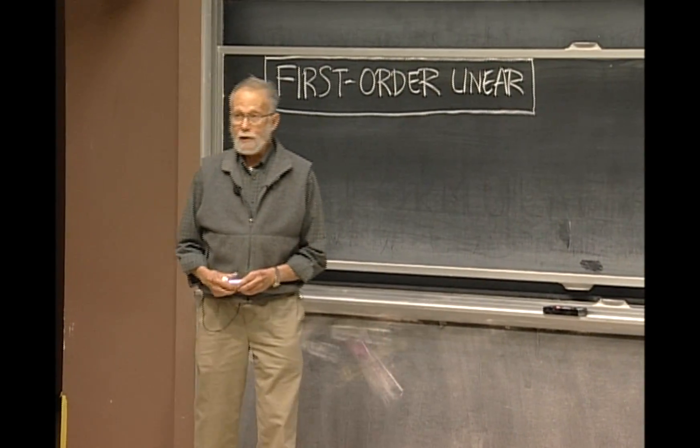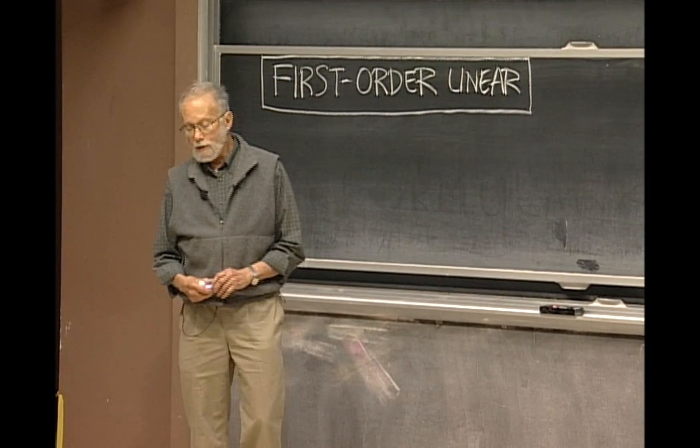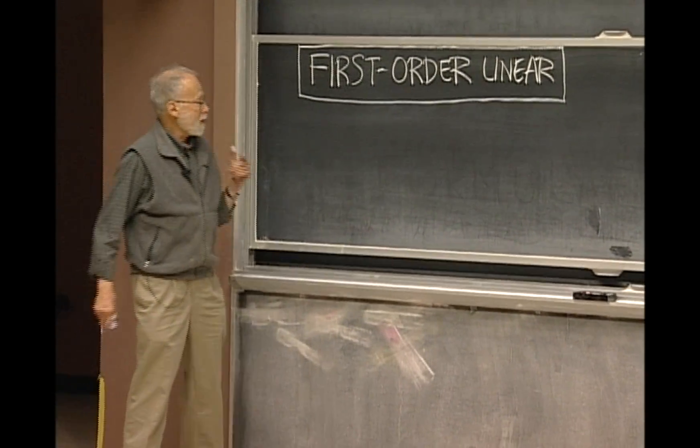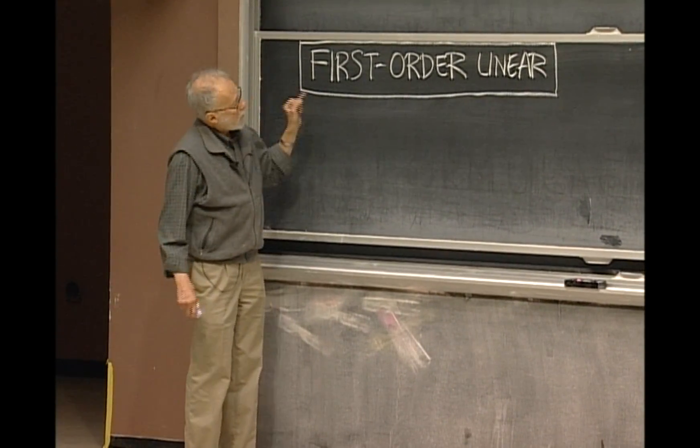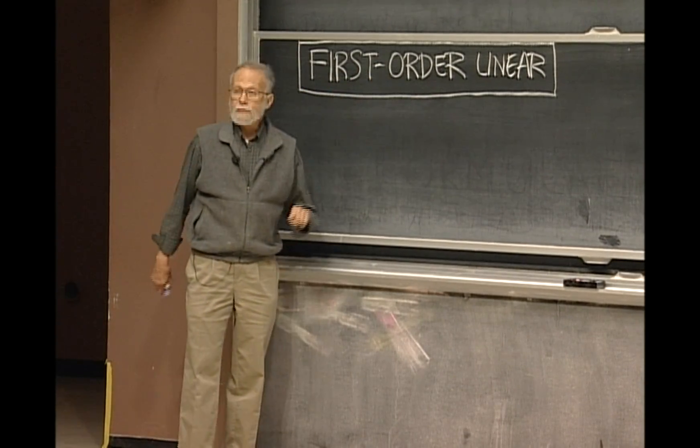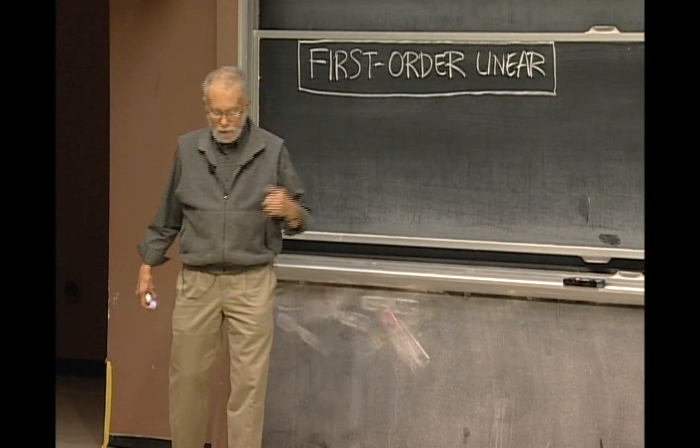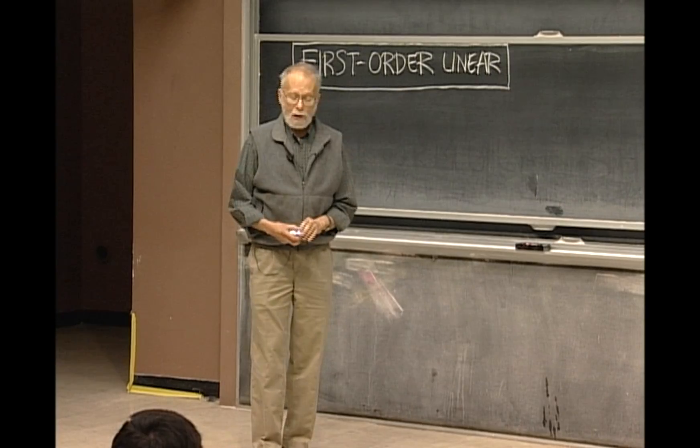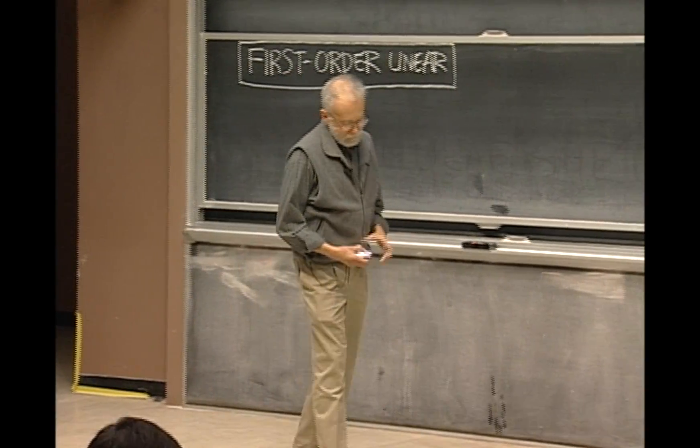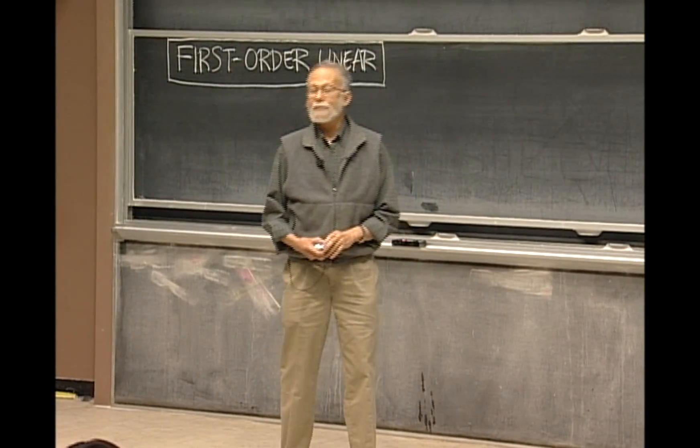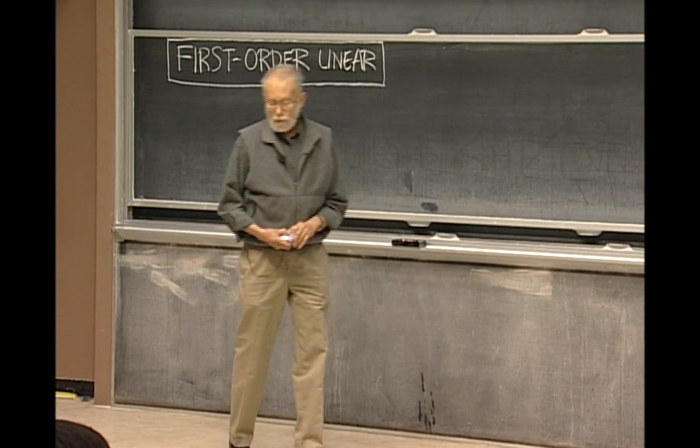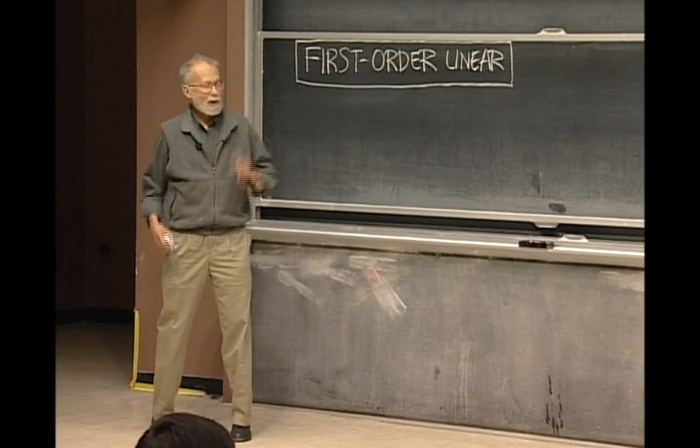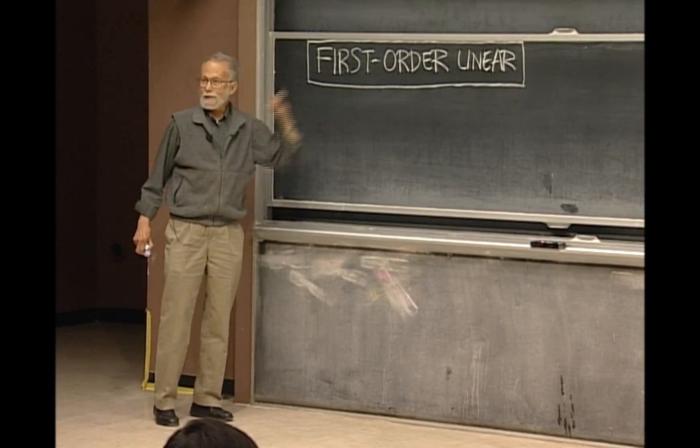Once you learn separation of variables, which is the most elementary method there is, I think the single most important equation is the one that's called the first-order linear equation, both because it occurs frequently in models, because it's solvable, and I think that's enough. If you drop the course after today, you'll still have learned the two most important methods: separation of variables and first-order linear equations.